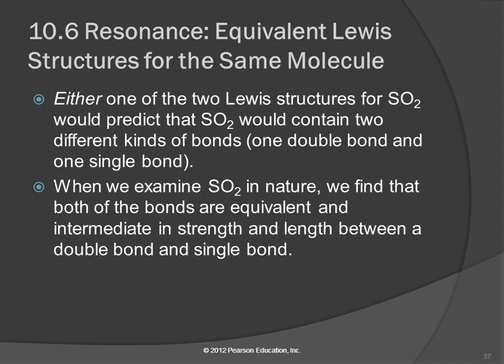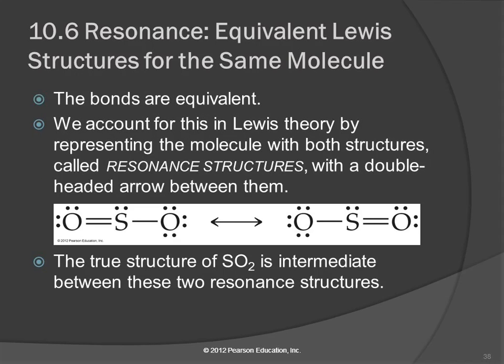Either one would predict that we've got a double bond and a single bond, but we actually find that those bonds are identical. We can measure the strength and length of them, and they are intermediate between a double and a single bond. So we say these are resonance structures and the true structure is in between.